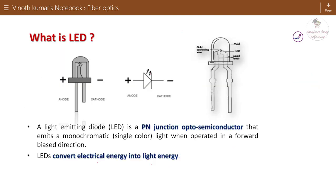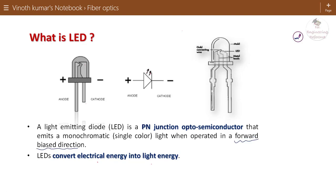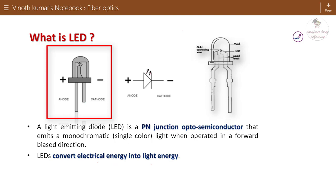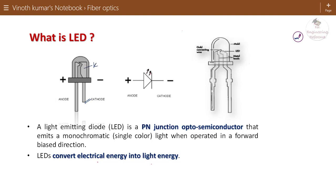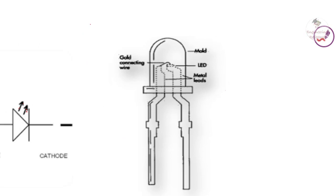A light emitting diode is a pn junction opto-semiconductor device that basically generates and emits light over the junction when the pn junction diode is connected in forward biased condition. So it converts electrical energy into light energy. Looking at this picture, this is how the light emitting diode looks. The shorter lead is connected to the cathode terminal and the longer lead is connected to the anode. The junction points are connected with gold connecting wires.